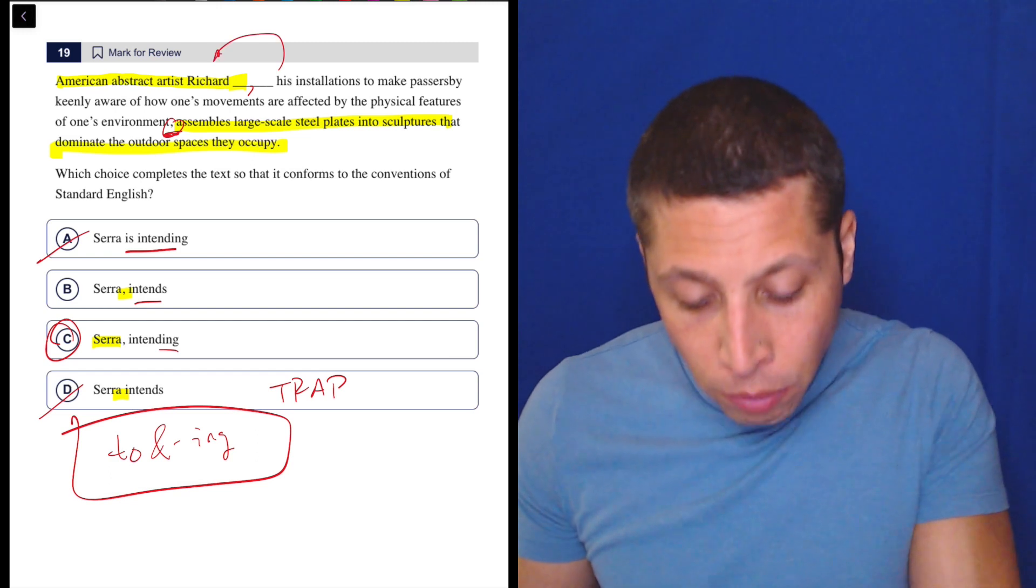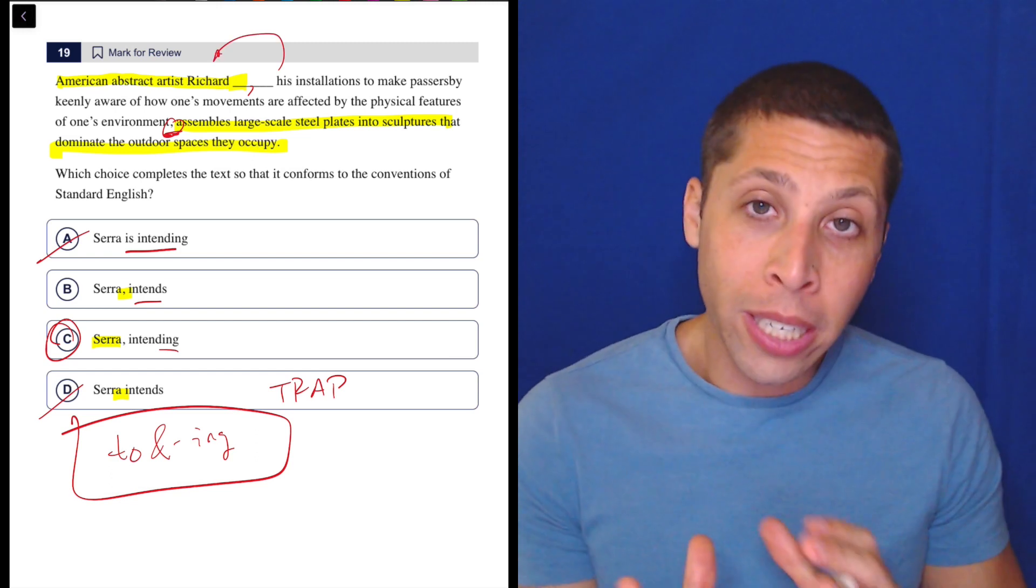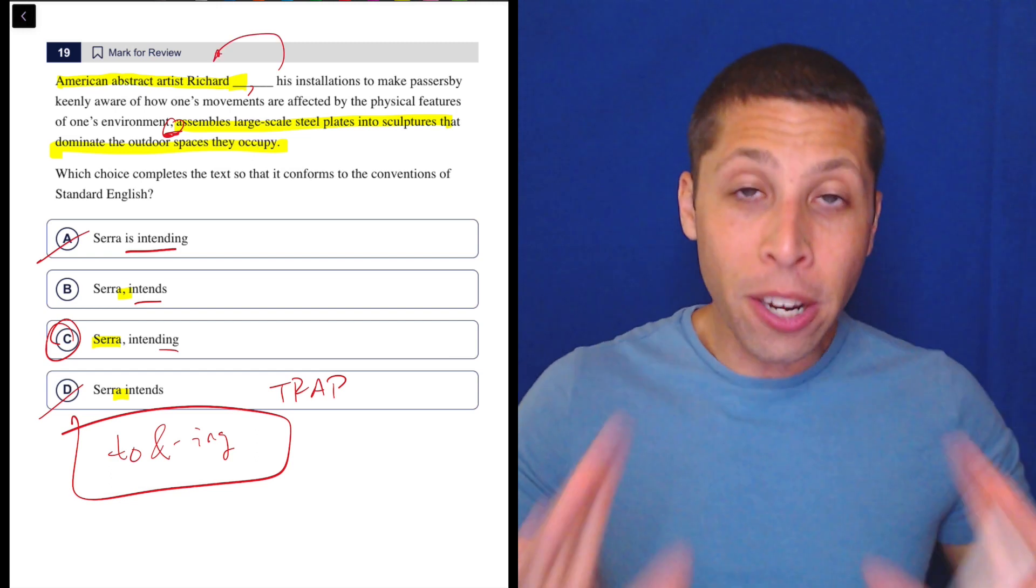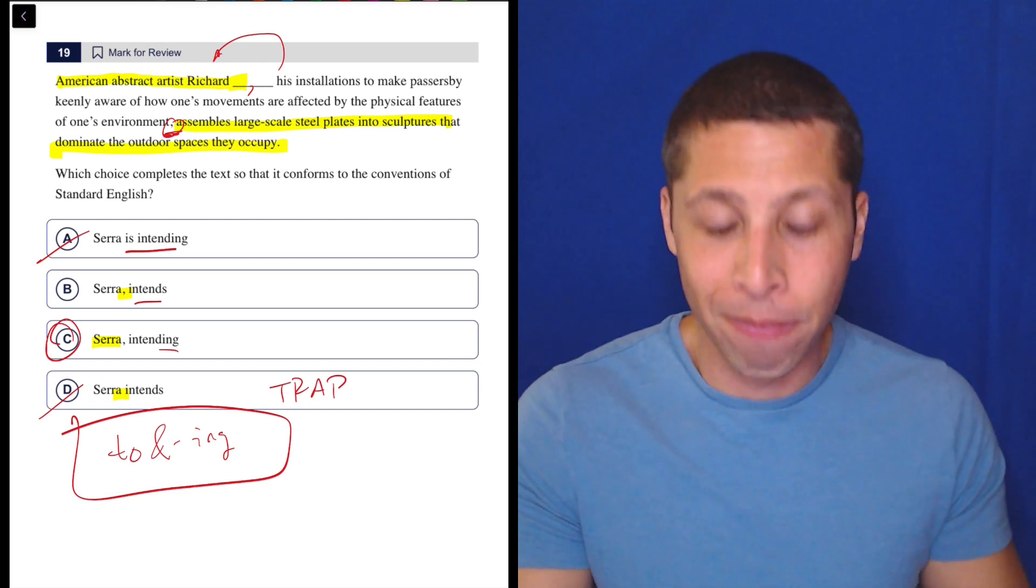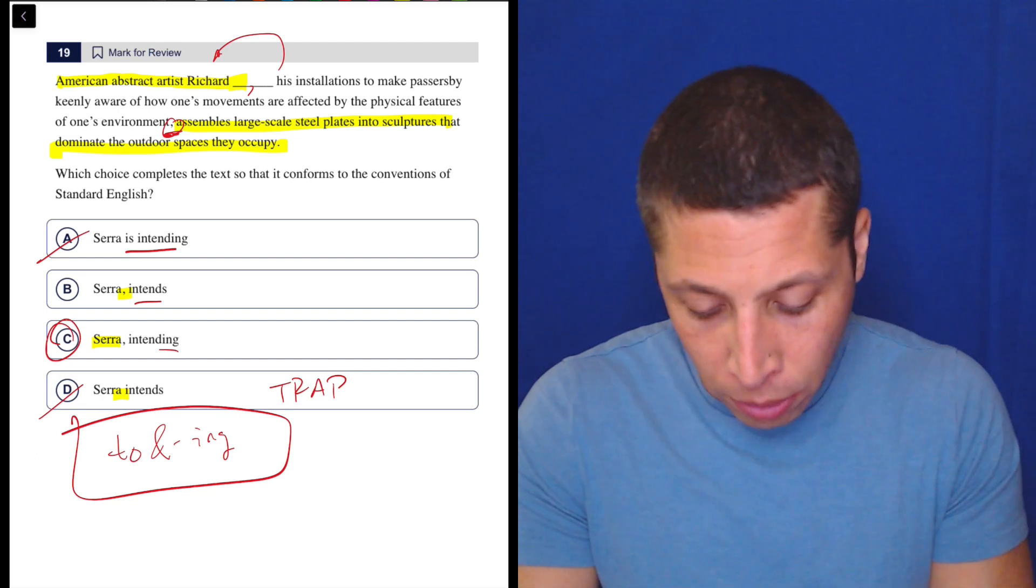We are still describing what Richard is doing, but we're doing it in a way that kind of flips the order. So here's probably how I would have written the sentence to make it more easy to follow. I would have started with this part.